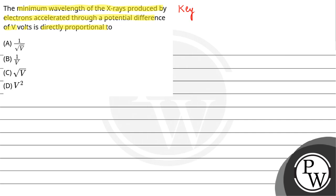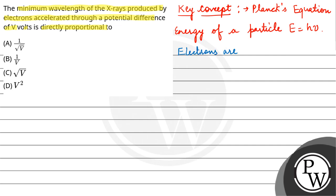So here our key concept is Planck's equation. Energy of a particle is given by the relation E is equal to H nu. Now, according to question, when electrons are accelerated by potential difference of V volt,